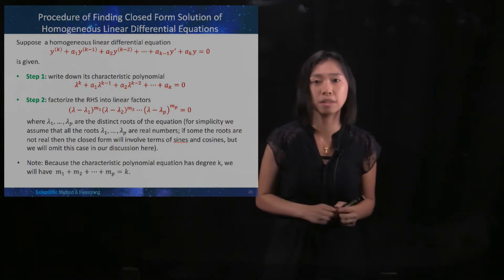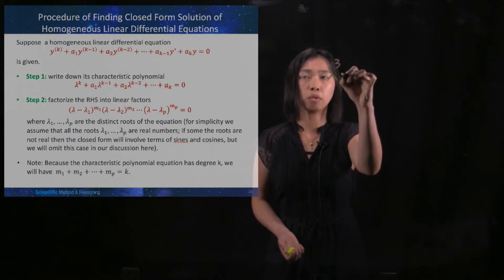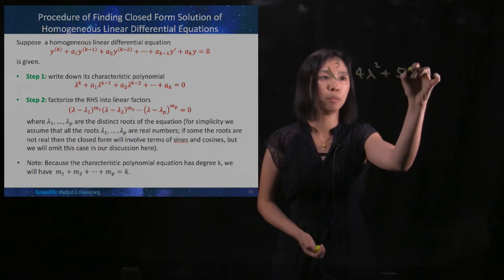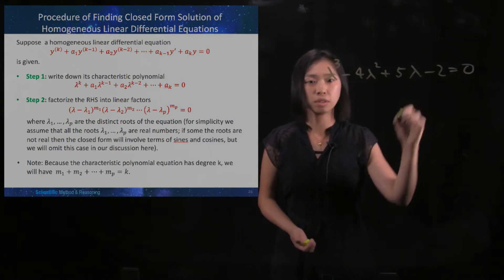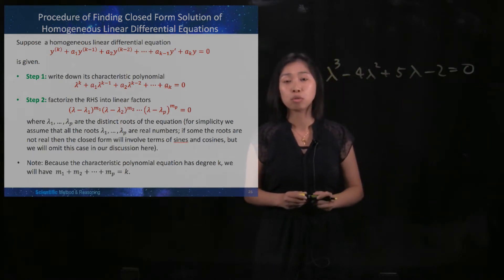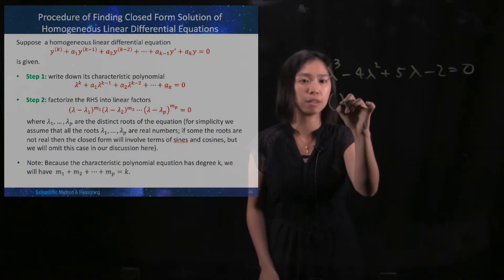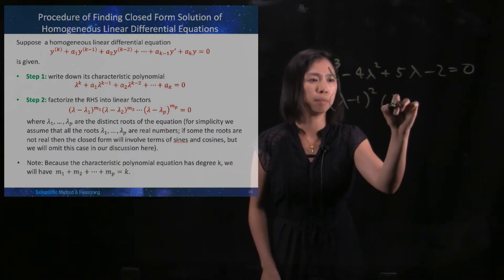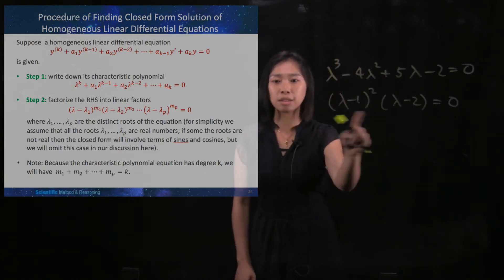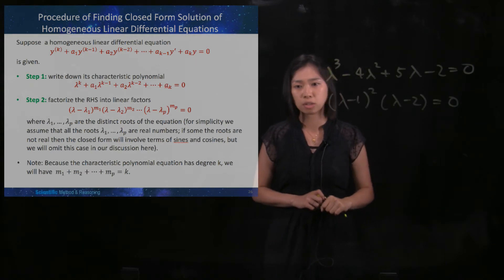we will factorize it. For example, if we have something like lambda to the power of 3 minus 4 lambda squared plus 5 lambda minus 2, which equals 0, then we use the algebra learned in high school to factorize this. This is Step 2 — the factorization step.